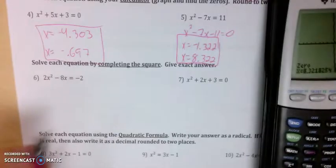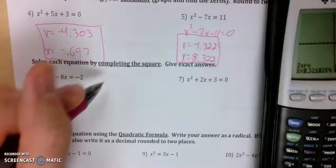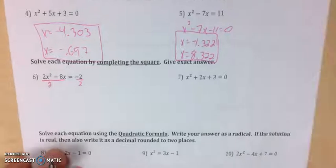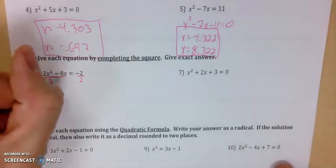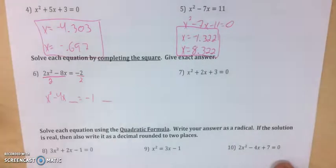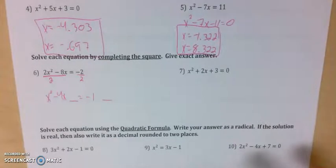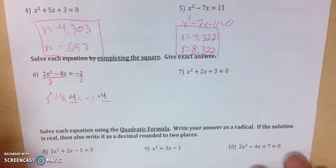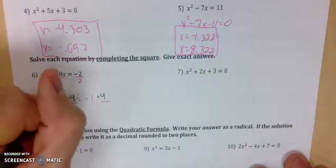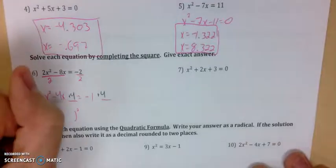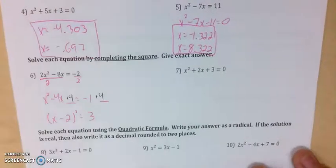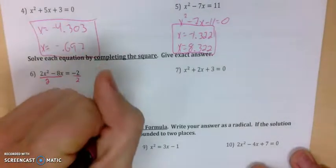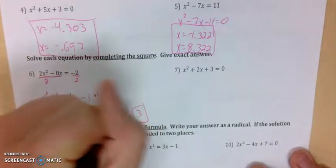Next up is solving by completing the square. First and foremost, I don't like to have any number attached to my x squared, so I'm going to divide that out of both sides. This gives me x squared minus 4x, and I leave a blank space, equals negative 1, blank space. To find what goes in the blank, I take half of negative 4, which is negative 2, and square it to get 4. So the left side factors to x minus 2 quantity squared equals 3. Taking the square root of each side and moving the 2 over gives me 2 plus or minus the square root of 3.